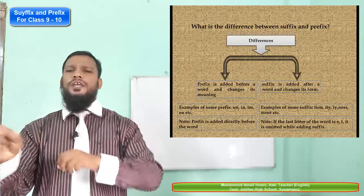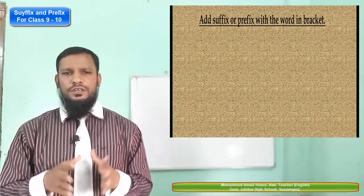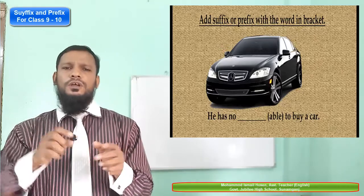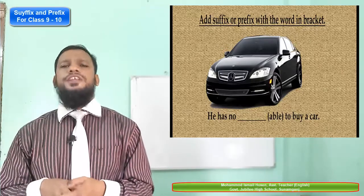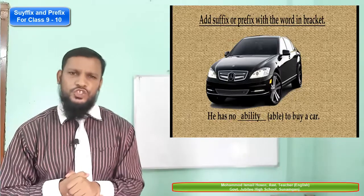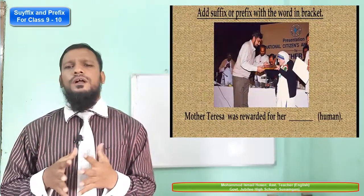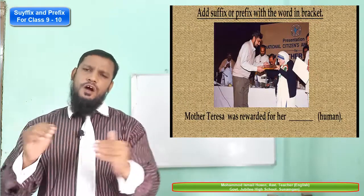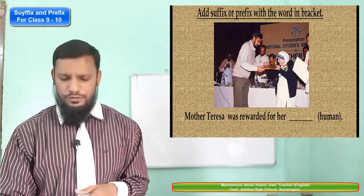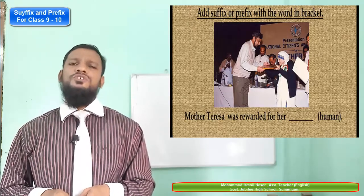For example: 'He has no ability to buy a car' — 'able' with 'e' omitted and '-ity' added gives 'ability'. Then, 'Mother Teresa was rewarded for her humanity' — 'human' plus '-ity' gives 'humanity'. In this case, no changes come to the spelling.